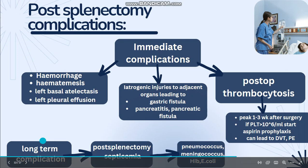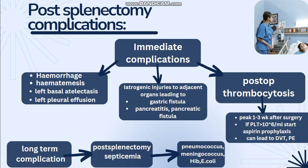In post-operative long-term complications, post-splenectomy septicemia is very important. The organisms involved are encapsulated bacteria: pneumococcus, meningococcus, H. influenzae type B, and E. coli. The spleen plays an important role in the production of opsonins — proteins that cause the production of pores in the cell wall of bacteria and allow WBCs to enter the bacteria to kill them.